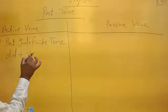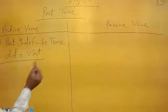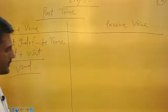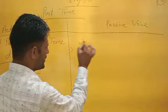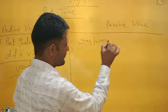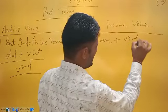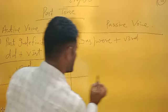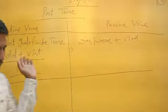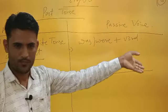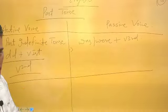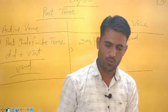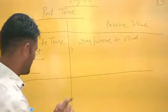Past Indefinite Tense: in active voice, the structure is 'did plus first form' or 'second form of the verb.' In passive voice, it changes to 'was/were plus third form of the verb.' In passive voice, the third form of the verb is always used. Just like present indefinite changes to 'is/am/are plus third form,' past indefinite changes to 'was/were plus third form.' The remaining rules — subject changes into object and object changes into subject — remain the same.